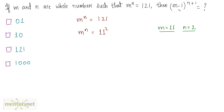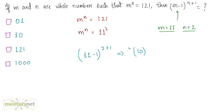We know the values of m and n, so we can put them into this expression and get the answer. So m minus 1, which is 11 minus 1, raised to n plus 1, which is 2 plus 1. That is equal to 10 raised to 3, and that is 1000. So our answer is option D.